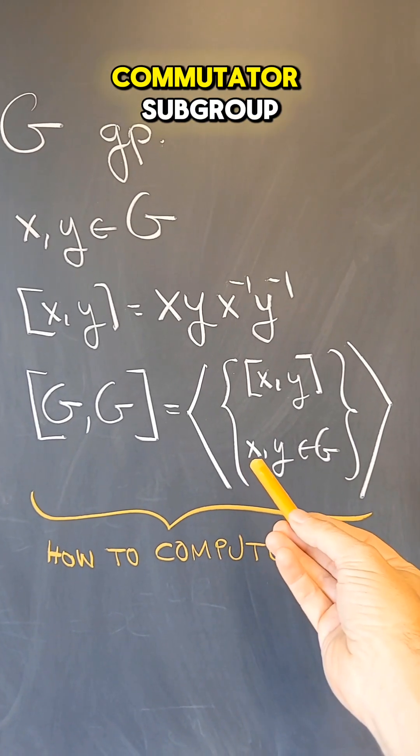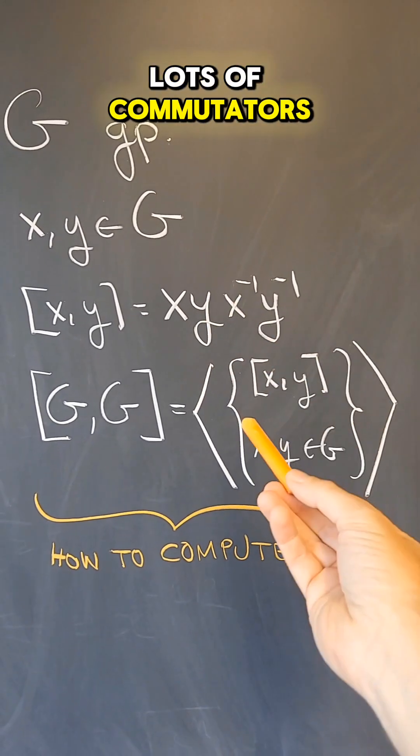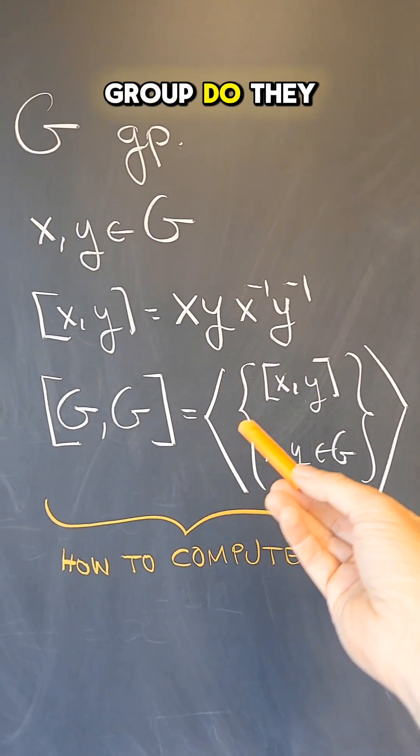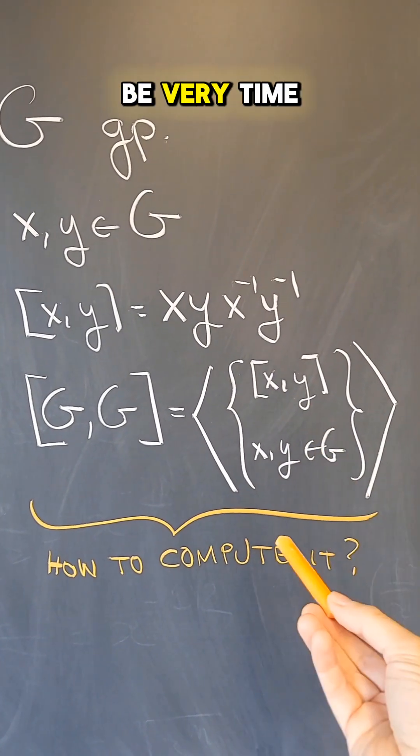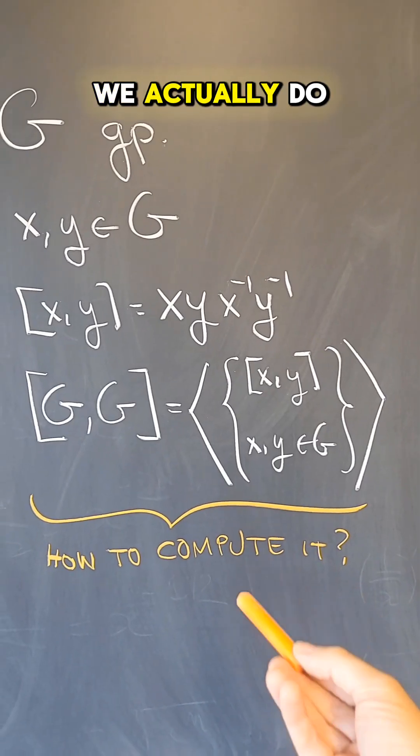So how do we compute this commutator subgroup? In general you have to start by computing lots of commutators and see what group do they generate. But that can be very time consuming and quite difficult in general.